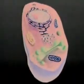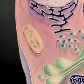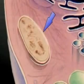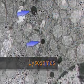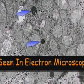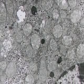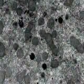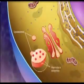Lysosomes are membrane-enclosed vesicles that form in the Golgi apparatus. They may contain over 40 different powerful enzymes that enable the cell to digest and destroy large molecules. Lysosomes help white blood cells destroy foreign substances, such as viruses and bacteria that invade the body. Lysosomes are also membrane-bound vesicles that contain hydrolytic enzymes.